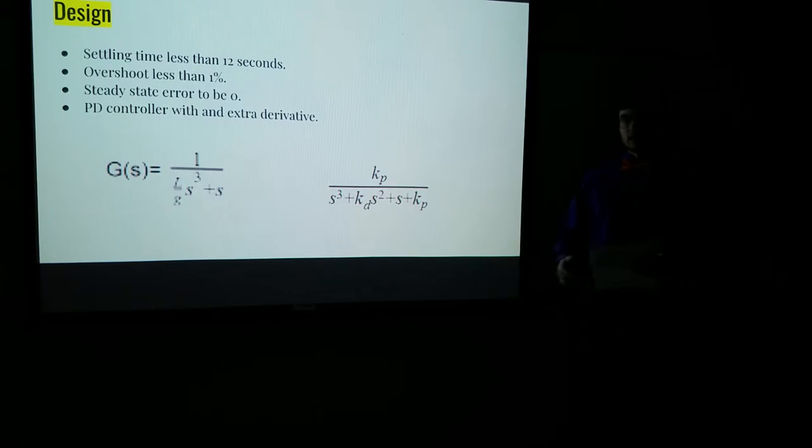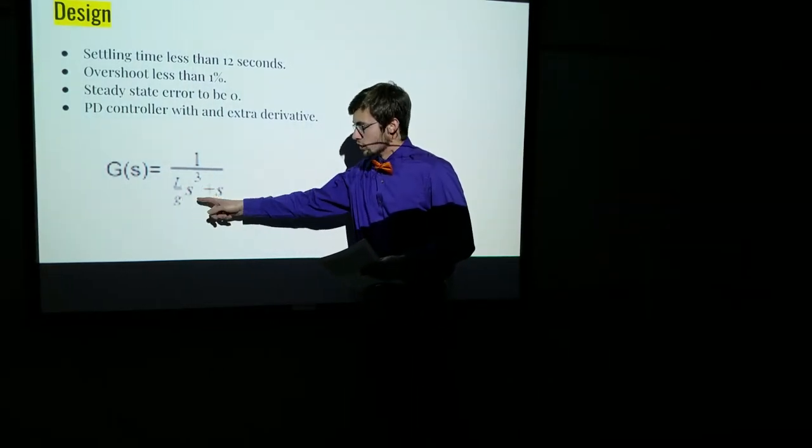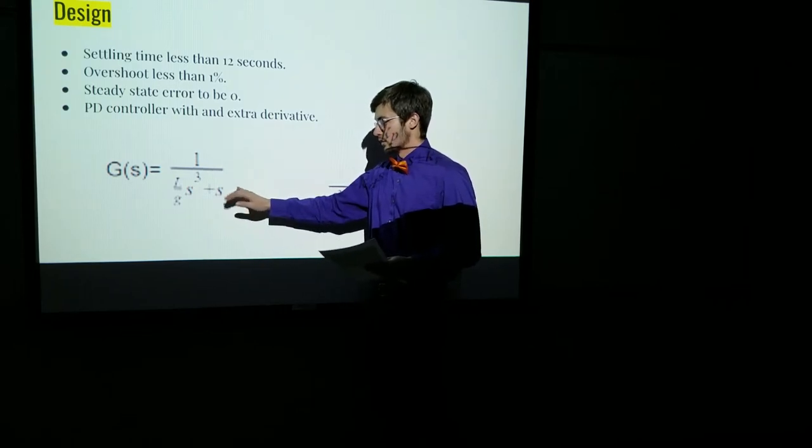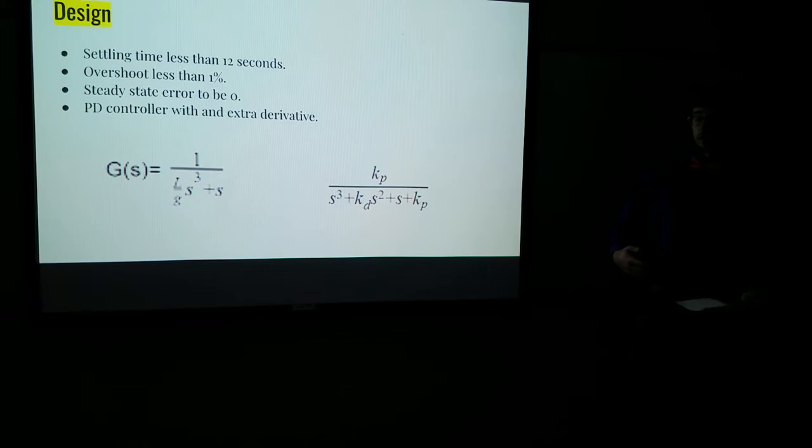So the next part of the design was picking a controller that we need. And we decided to go with a PD controller with an extra derivative. And the reasoning behind this is our transfer function was unstable as shown before. And when we did the Routh-Hurwitz on that, we realized the reason for this is because there's an S cubed term here. There's no S squared term. There's an S term and there's a constant that's missing. So the S squared and that constant being missing is what's causing the instability. So we're trying to figure out a way to get those back in there.